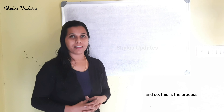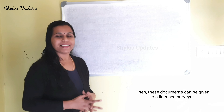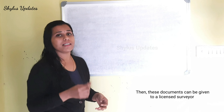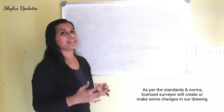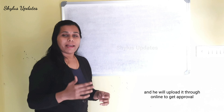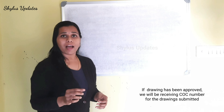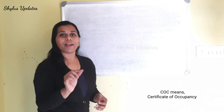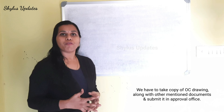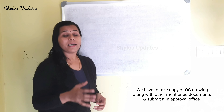For corporation plan approval, first we need to make sure all the documents for approval are ready along with the floor plan. These documents can then be given to a licensed surveyor. As per the standards and norms, the licensed surveyor will create or make changes to our drawing and upload it online to get approval. If the drawing is approved, we will receive a COC number — Certificate of Occupancy — for the drawing submitted. We then take a copy of the OC drawing along with the other documents and submit it in the approval office.